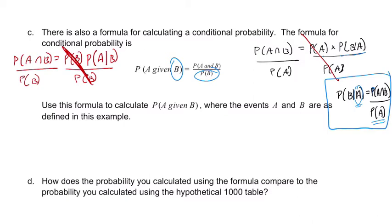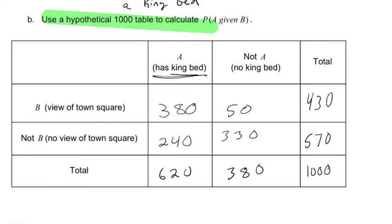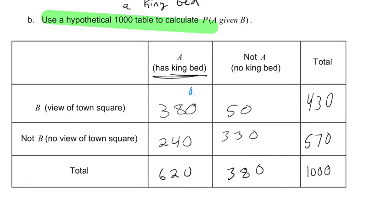It says use this formula to calculate probability of A given B, where the events A and B are as defined in this example. It goes back to this problem right here. Now, I'm going to write just really quickly for myself the probabilities in these sections. So we have 0.38, just dividing all by 1,000, 0.05, 0.330, 0.380, 0.578, 0.43. You'll see why I'm doing this in a moment, 0.24, 0.62, and 1.